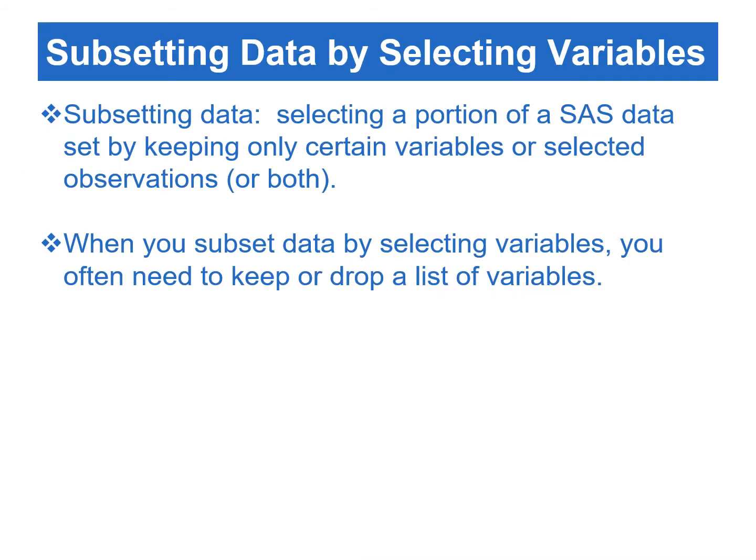In SAS language, subsetting data refers to selecting a portion of a data set by only keeping certain variables, or selected observations, or both. This section covers how to subset a data set by selecting certain variables. Subsetting a data set by selecting observations is covered in Chapter 3. To subset data by selecting variables, we can either keep or drop one or more variables.